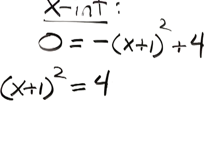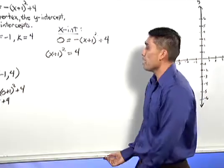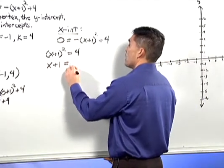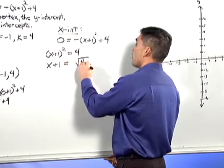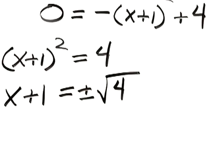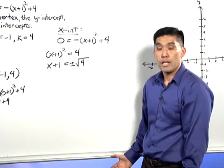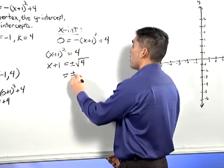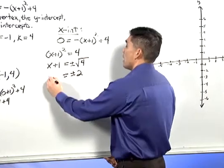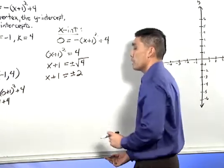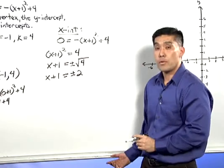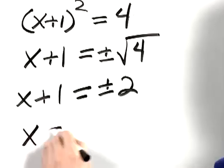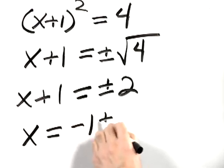And now we need to solve this quadratic equation for x. Taking the square root of both sides, we get x plus 1 equals the square root of 4. And don't forget the plus or minus in front of that square root. The square root of 4 is 2. So we have plus or minus 2 on the right-hand side and x plus 1 on the left. And to solve for x, we subtract 1 from both sides. x equals negative 1 plus or minus 2.